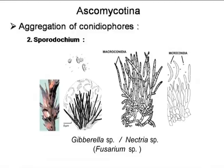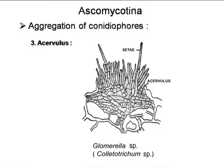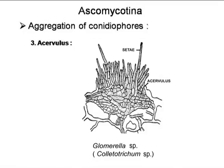The next type of aggregation is acervulus. It is basically a saucer-shaped structure, again composed of a basal part and an upper or aerial part. The basal part is composed of mycelial structure, but the aerial fertile part is very small, and within the fertile part one can find small conidiophores bearing terminal conidia. It differs from sporodochium in that in acervulus, stiff, brown, bristle-like structures called setae are present. So in acervulus, conidiophores and setae remain intermingled.